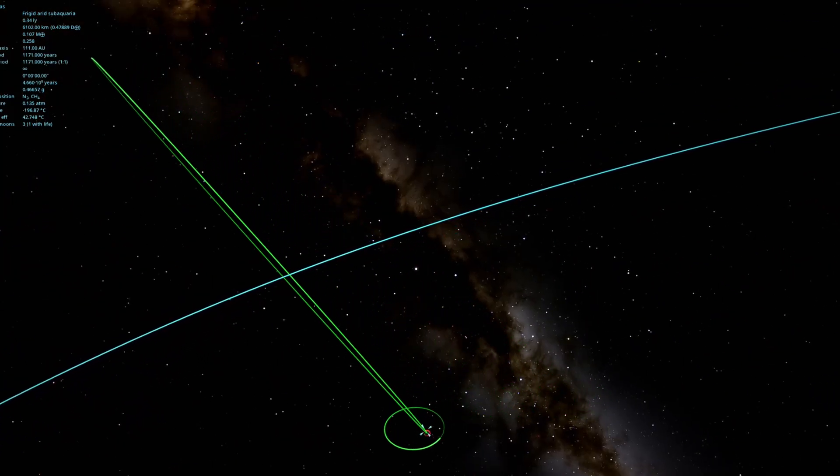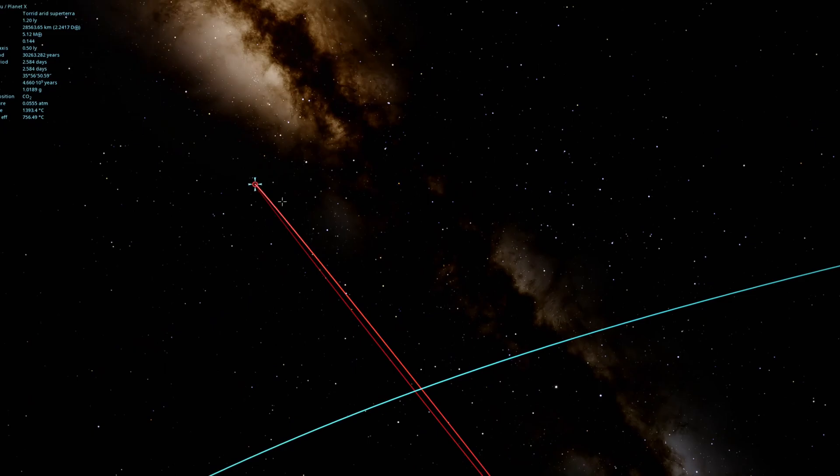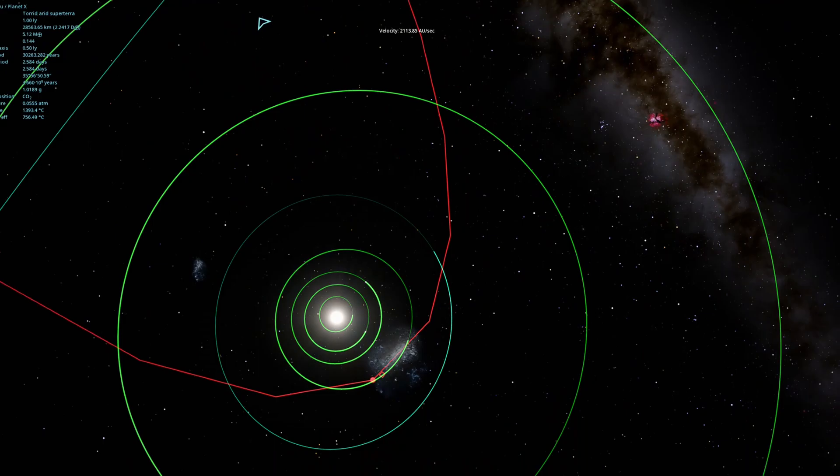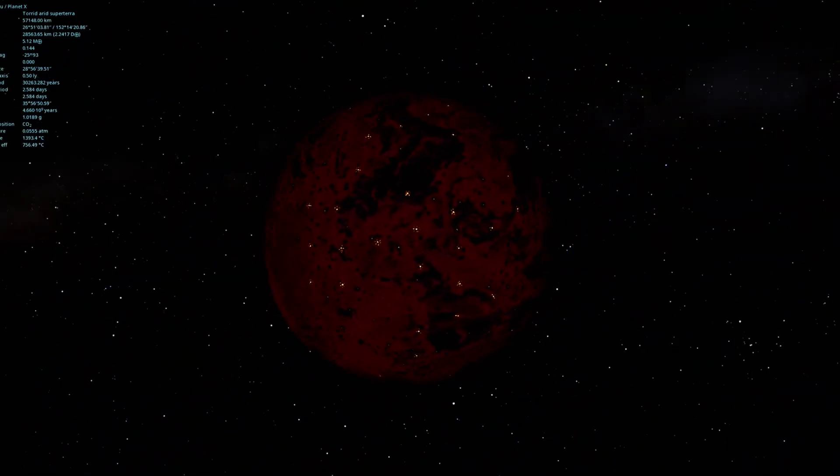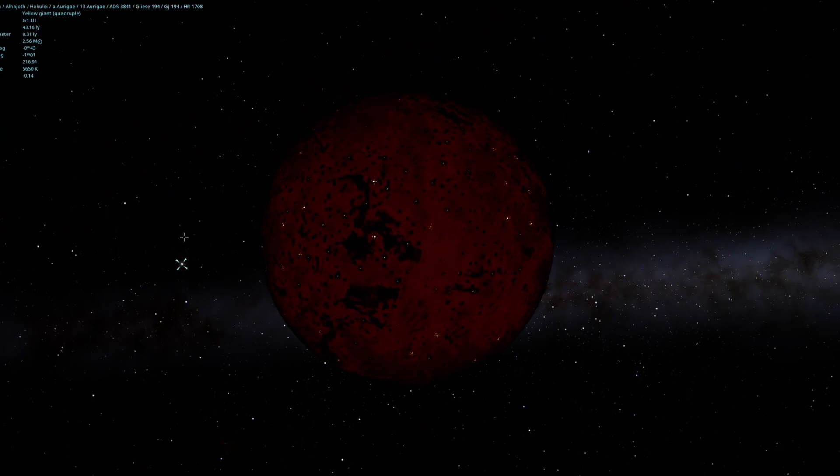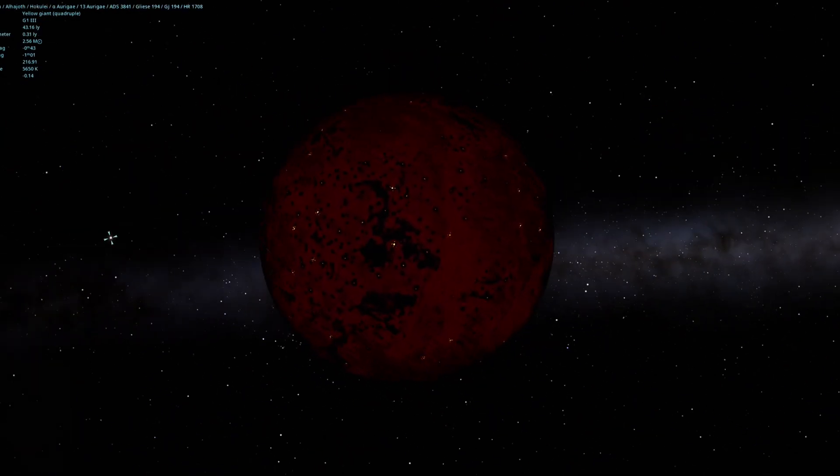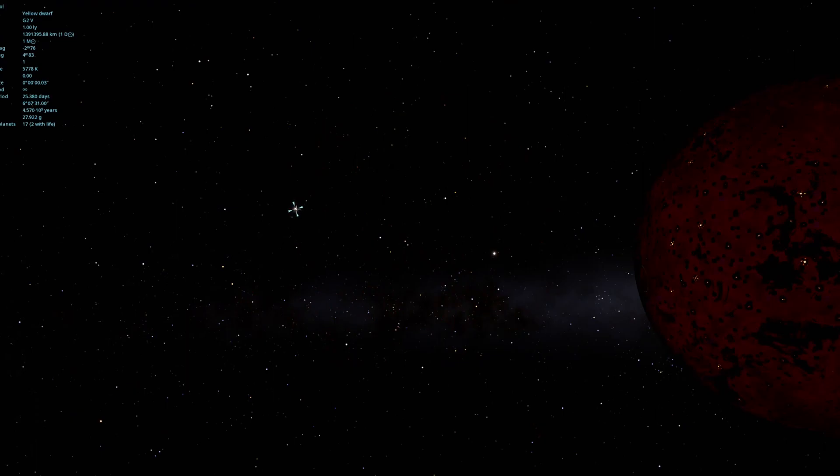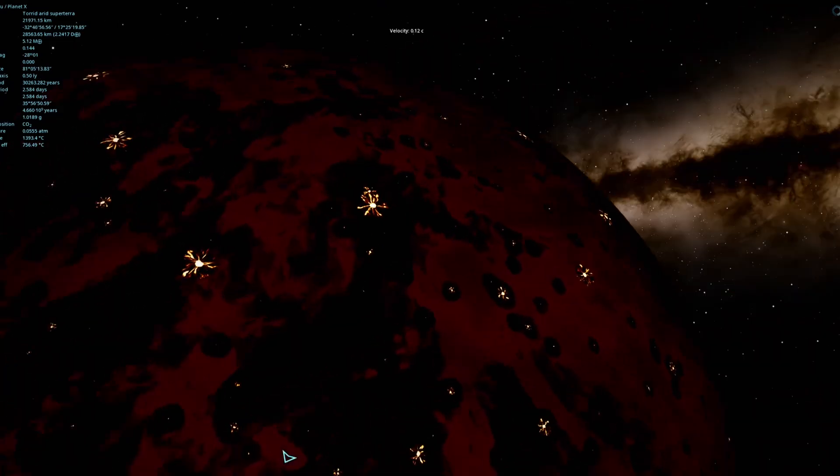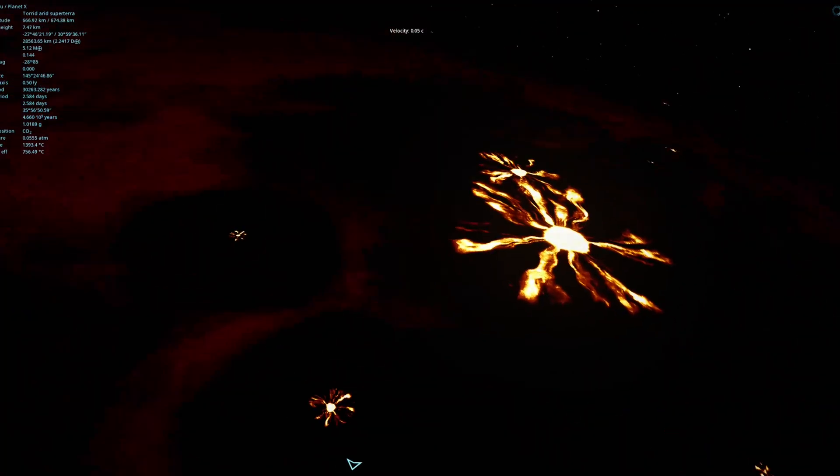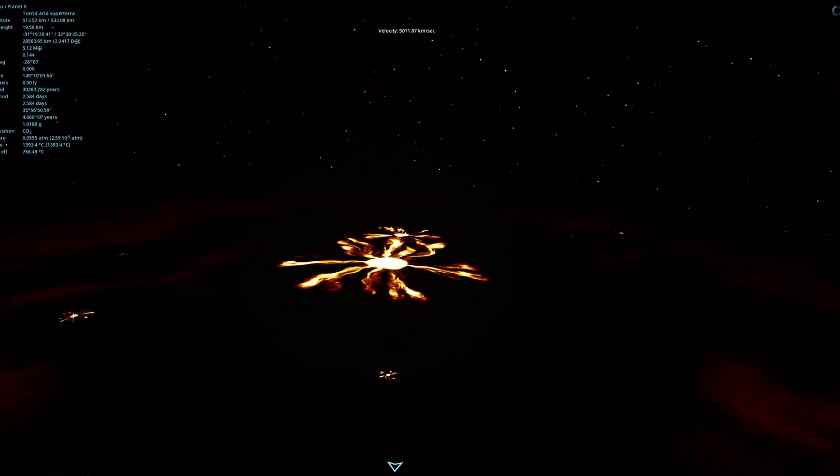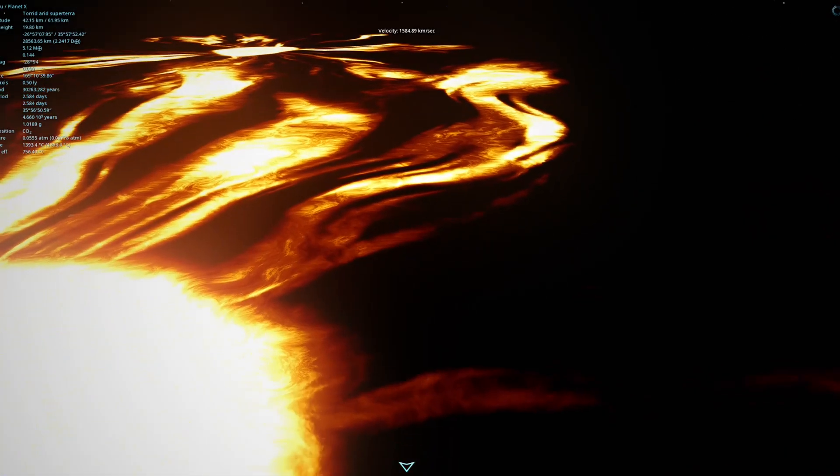next planet is Planet X, which is right up here with an extremely elliptical orbit around the sun. Here it is, looks like a very volcanic planet. There's the sun right there. Oh, that's actually not the sun, that's the sun right there. Very dark out here, but it looks like all of these volcanoes are doing a good job of lighting the planet up. Let's go ahead and try to land on one.